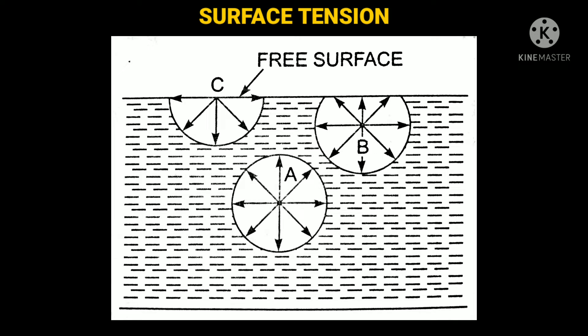The phenomena of surface tension is explained by the figure shown here. Consider three molecules named as A, B and C in a mass of liquid. The molecule A is attracted in all directions equally by the surrounding liquid molecules. Thus, the resulting force acting on molecule A is zero, but when we observe molecule B which is near to the free surface, it is acted upon by upward and downward forces which are unbalanced. Thus, a net resultant force on molecule B is acting in the downward direction.